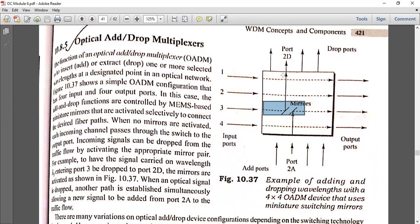The mirror is activated and the path gets connected to the 2D port. The wavelength is dropped. If you have a signal carried on a wavelength entering port 3, it can be dropped to port 2D when the mirrors are activated.